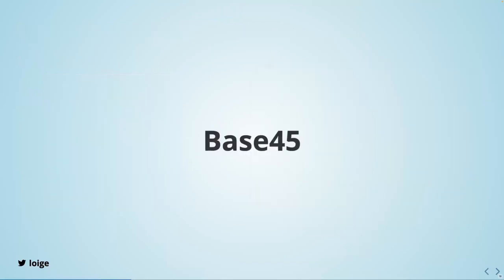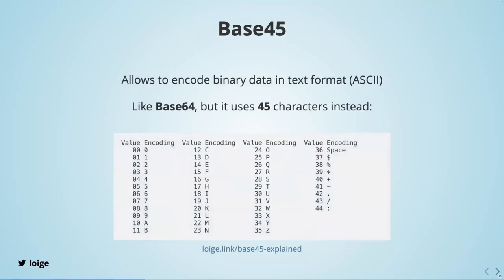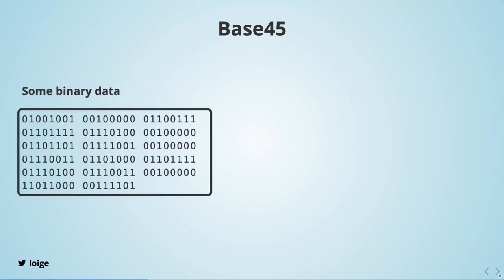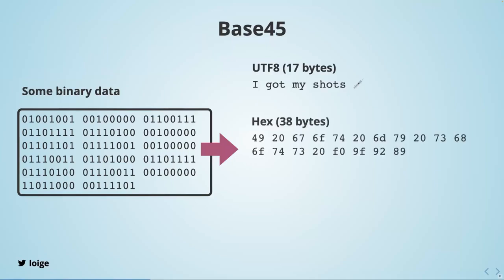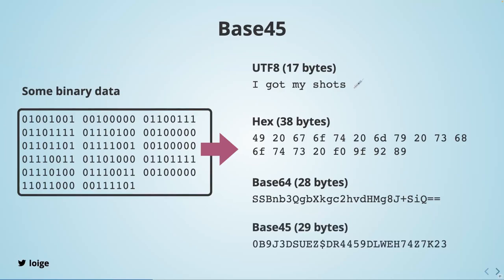What is Base45? We all know Base64, and Base45 is something very similar, but rather than using 64 characters it uses 45. The reason for 45 rather than 64 is that empirical tests showed they compress better using zlib and the result in a QR code is better than using Base64. So Base45 is just one of the many ways to represent arbitrary binary data as a string — like if it's Base64 it looks one way, Base45 looks slightly different.